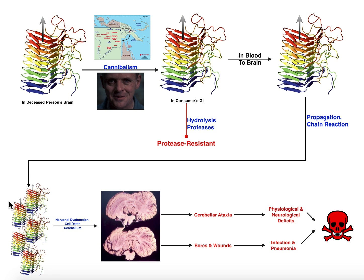Kuru mainly affects the cerebellum — this is the major part of the brain affected by this disease. Whenever you have these prion aggregations, the neurons in that part of the brain are susceptible to apoptosis, mainly because these proteins can insert themselves into membranes and disrupt calcium homeostasis. They cause a major, excessive calcium influx into these neurons, which causes mitochondrial dysfunction.